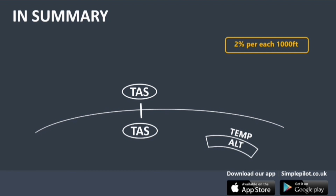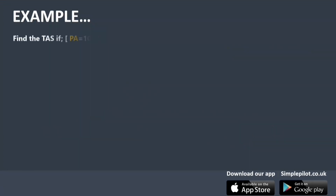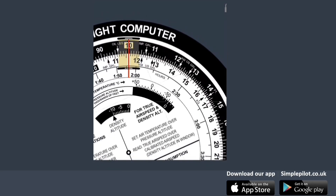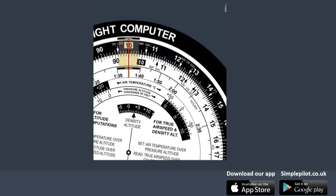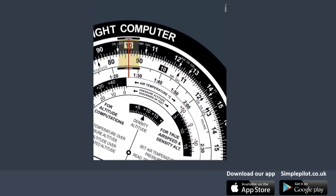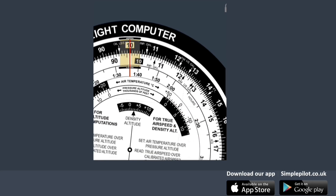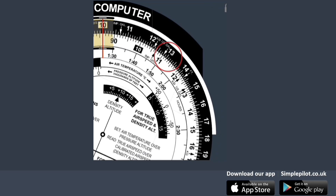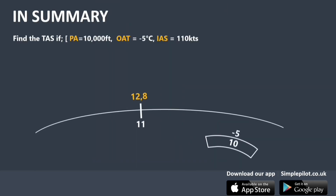Let's see an example. We have to determine the true airspeed given a pressure altitude of 10,000 feet, an outside air temperature of minus 5 degrees, and an indicated airspeed of 110 knots. The first step is to align the pressure altitude of 10,000 feet with the temperature of minus 5 degrees on the inner right window. Then we look for the number 11 on the middle scale, representing 110 knots of indicated airspeed. Finally, we read the corresponding true airspeed of 128 knots on the outer scale.